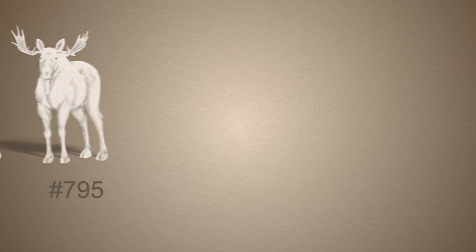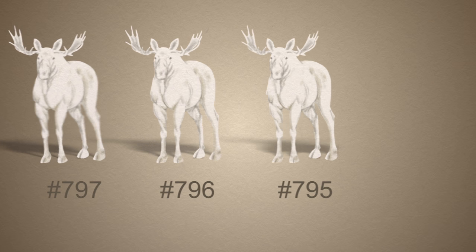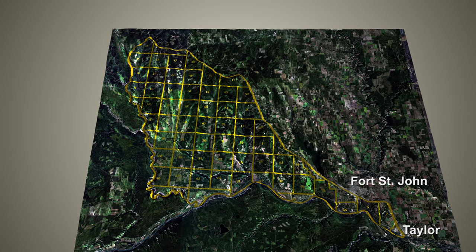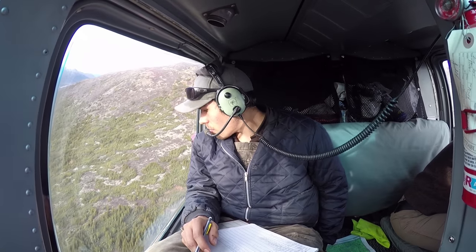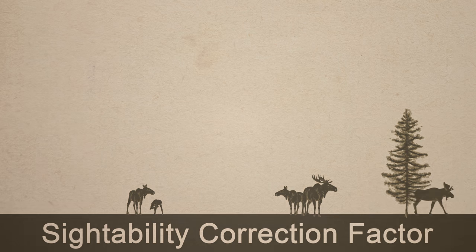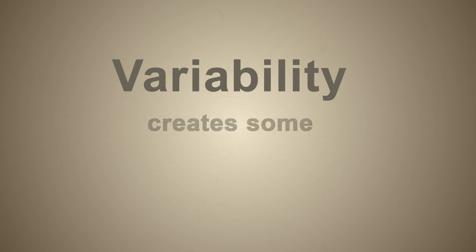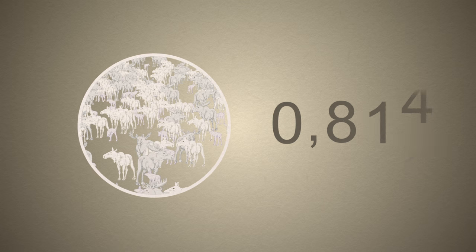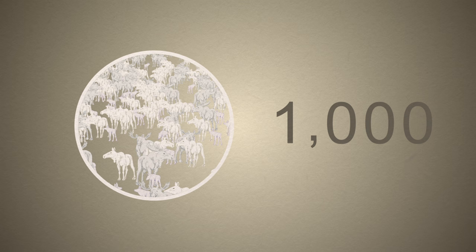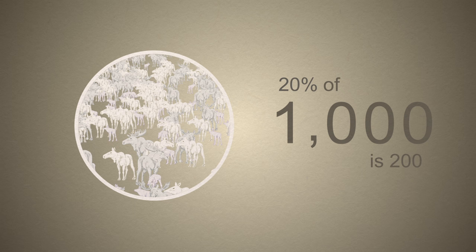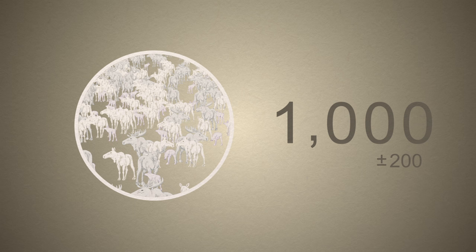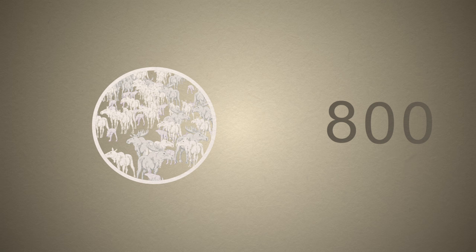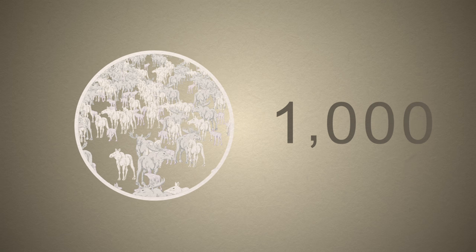What we're looking for in a survey is an accurate estimate, not an exact number. Every step of the process — from stratifying blocks to the actual count to the sightability correction factor — has a little bit of uncertainty. We acknowledge that uncertainty by showing our final estimate as a range. So if we estimate 1,000 moose but calculate our uncertainty to be 20%, we would express that by saying the total population estimate is 1,000 plus or minus 200 moose. This tells us that the true number of moose in the area is between 800 and 1,200.